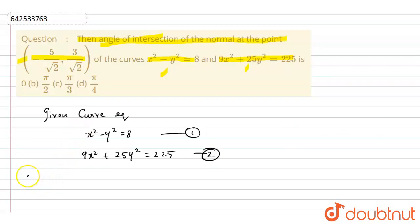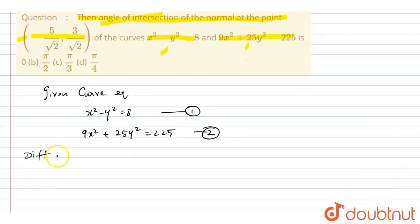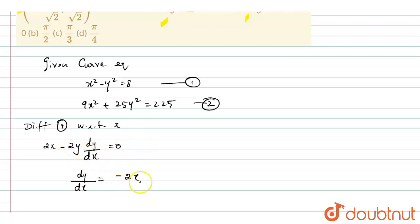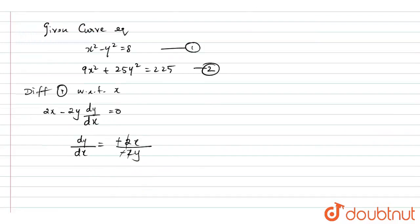First, I am going to differentiate equation 1 with respect to x. Differentiating x² minus y² = 8, we get 2x minus 2y into dy/dx equal to 0. Now finding dy/dx: taking 2x to the other side gives minus 2x, and 2y goes to the denominator as minus 2y. The minus signs cancel and the 2s cancel, so dy/dx equals x/y.